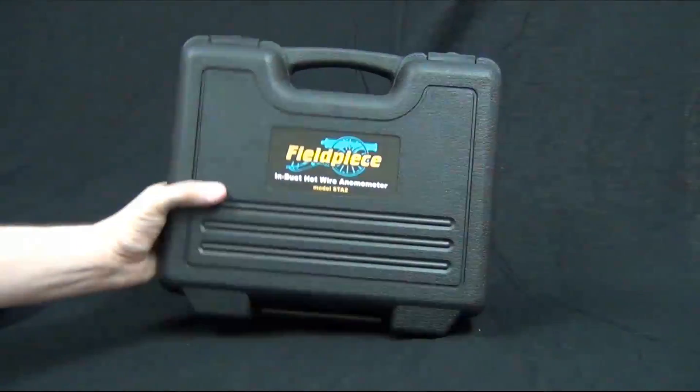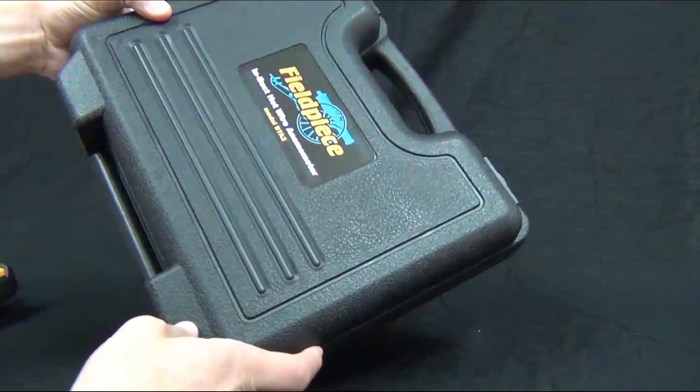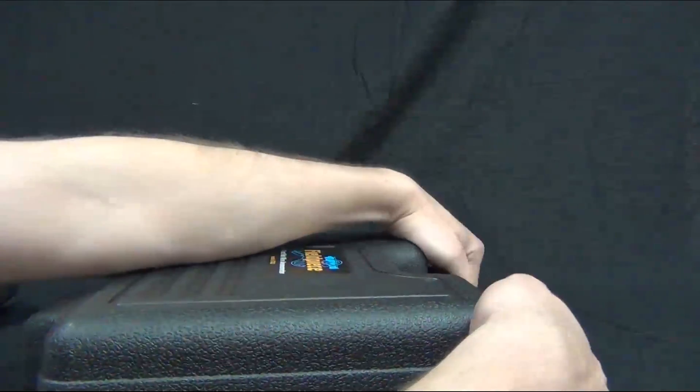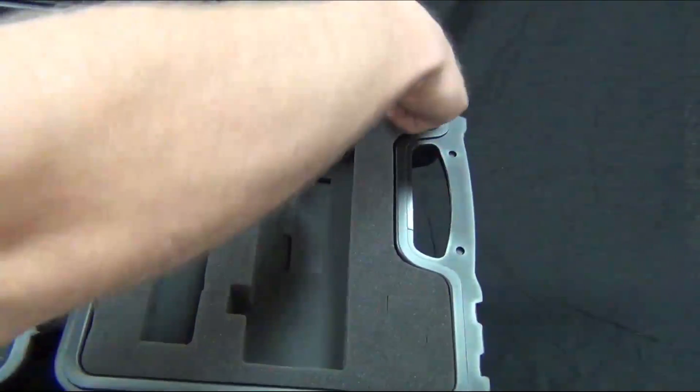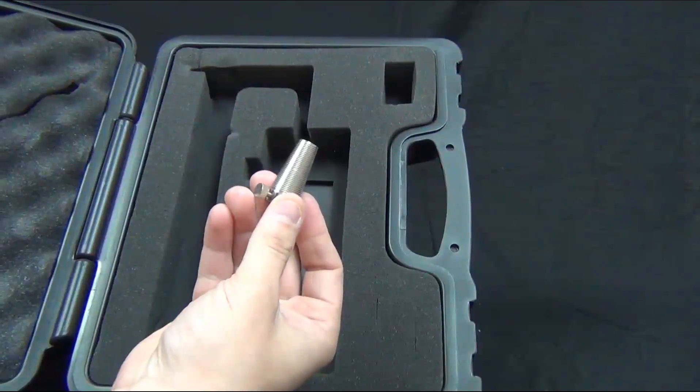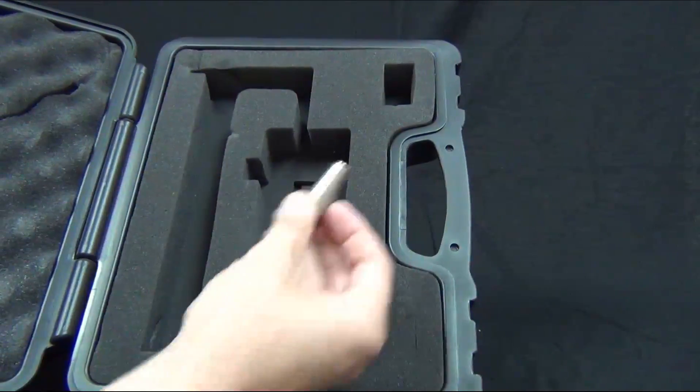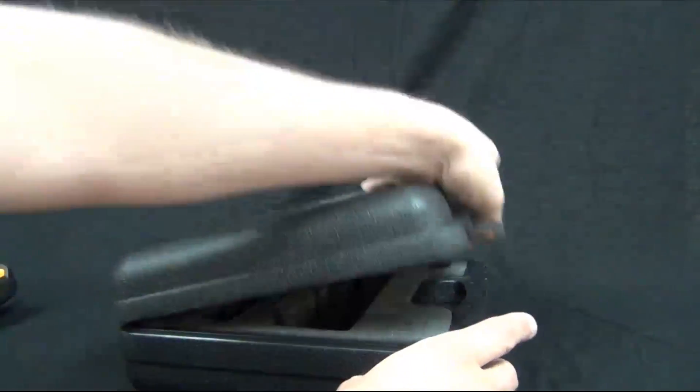Let's go ahead and take a look at the accessories. It comes in a blow molded case with nice foam pad inserts, and it also comes with a cone that you can attach to metal plenums to keep the wand in place.